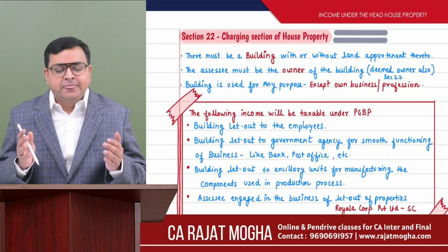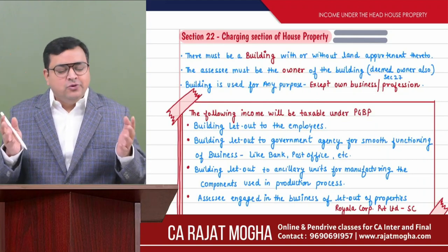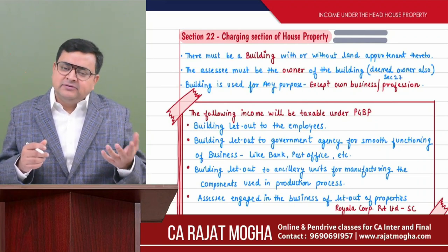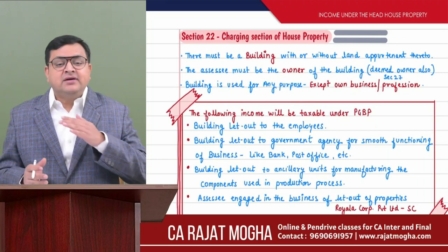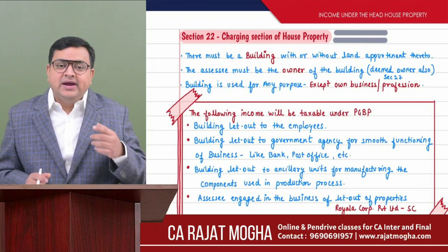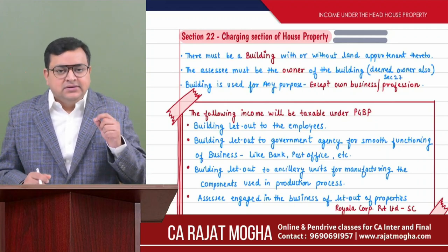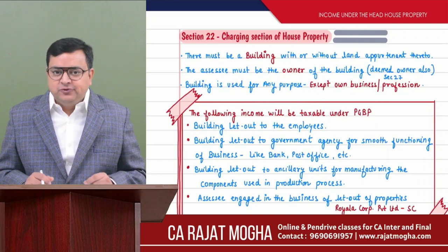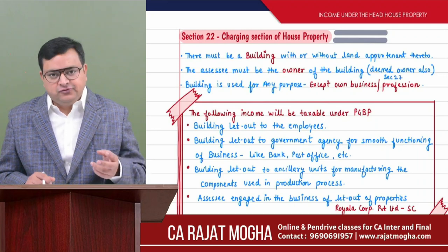Building means any built-up structure. It is not necessary that it should be a very big or tall building — it could be even a room or a two-room apartment, that is also a building. Any built structure is a building. But if it is entirely a vacant land, then it is not a building. If you are getting rent of a vacant land, that rent will be taxable under the head IFOS (Income from Other Sources). But if there is a building, the income will be taxed under house property.